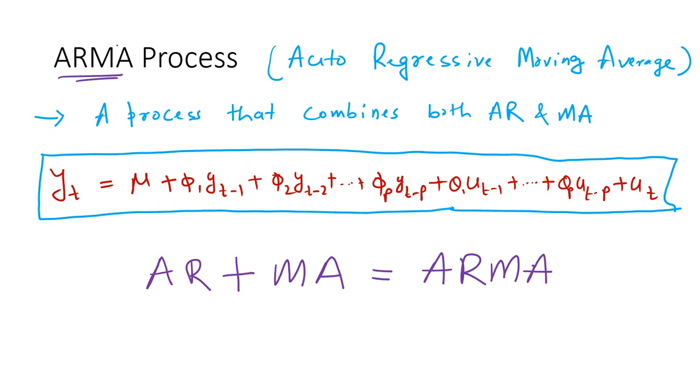From the name itself we know that it has got both AR component as well as the MA component. It is a combination of the AR series and MA series. When we combine both AR and MA you form one type of time series process known as the ARMA process.